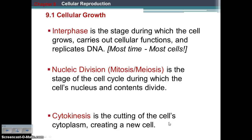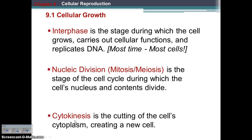There are three main stages of the cell cycle: interphase, the division of the nucleus, and cytokinesis. Interphase is where the cell spends the majority of its time — doing its normal thing, maintaining homeostasis, carrying out normal cell functions, and importantly, replicating its DNA. Then you have the actual division of the nucleus and the DNA; today we're going to talk about mitosis, later we'll talk about meiosis. And then cytokinesis is the actual cutting of the cytoplasm so that you have two entirely separate new cells.